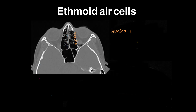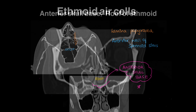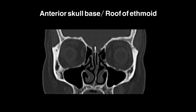Coming to the anatomy of ethmoidal air cells: the lateral wall is the lamina papyracea, and posteriorly there is the anterior wall of the sphenoid sinus. On coronal section, the roof is made of the anterior cranial fossa or anterior skull base, which we'll discuss in detail.